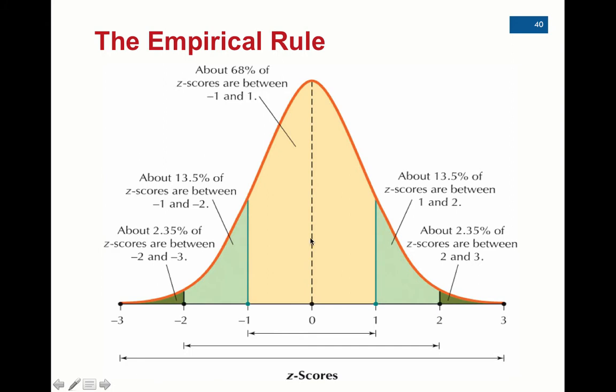Now why is it 13.5? Well, if you have 68% within one standard deviation and then 95% within two, from 68 to 95, you gain 27%. In other words, 95 minus 68 is 27%. And you gain that 27% equally in these two portions because this is a bell-shaped curve that's symmetric. So 27 divided by two is your 13.5.